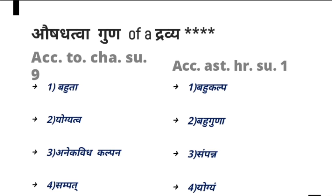Aneka Vidakalpana means the Dravya should be suitable to form different kinds of formulations — it should enable extraction of Swarasa, formation of Kalka, Kvata, Avaleha, and all other formulations. Sampat means it should be rich with the maximum number of Guruvadi Gunas. When intake, these Gunas help in increasing or decreasing BMI and other bodily parameters. Dravya should possess as many Guruvadi Gunas as possible.